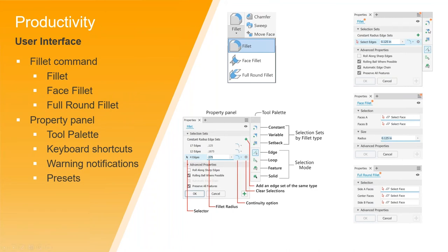In the ribbon panel for the constant radius fillet, you have a variable fillet and a corner operation. So if you have three edges and you want the shared point of those three edges to look a certain way, there are also filters here for edge selection mode, loop selection mode, or by feature — so I want to fillet by feature.